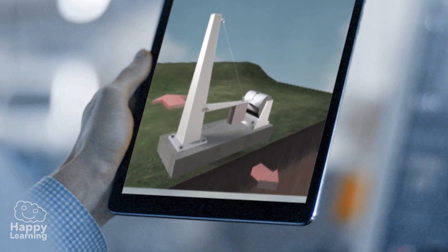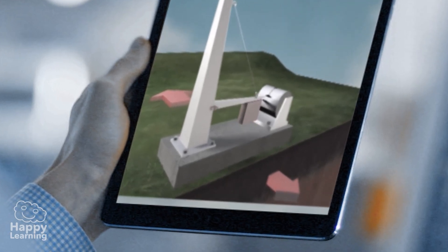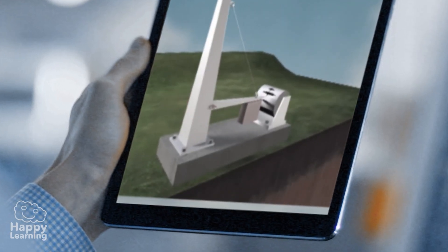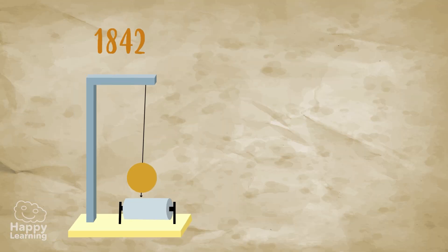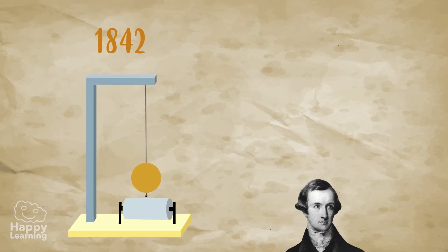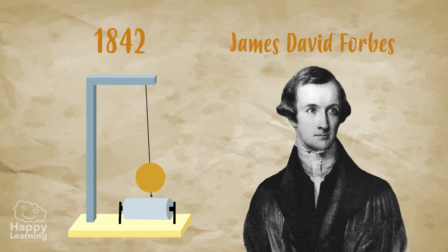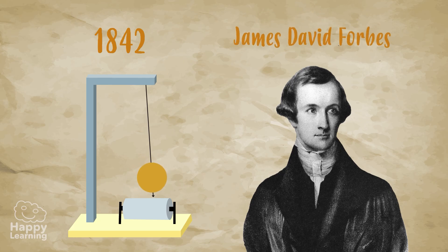The seismograph, or seismometer, is an instrument used to measure the earthquake's intensity. Invented in 1842 by the Scottish scientist James David Forbes, it measures the seismic waves that earthquakes cause.